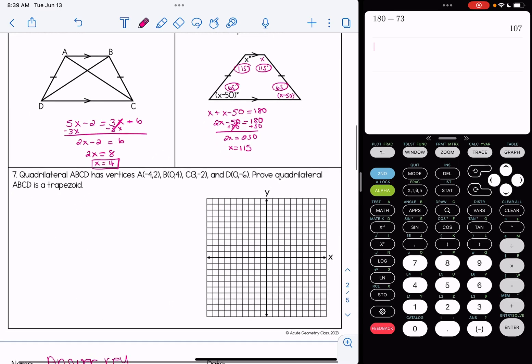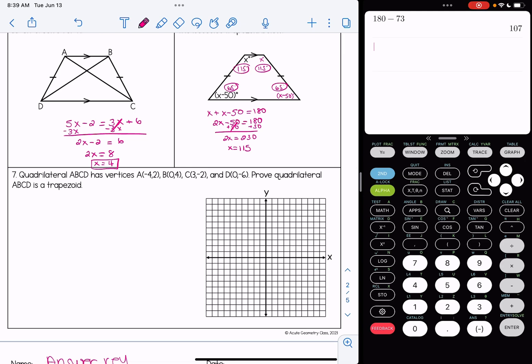Alright, our last problem is a little different. So this is something called a coordinate proof. It says quadrilateral ABCD has vertices, and it gives us four points. And we have to prove this is a trapezoid. Notice the question does not say is it a trapezoid. It's not a question. It's just saying prove it's a trapezoid. So we have to basically verify that this is a trapezoid.